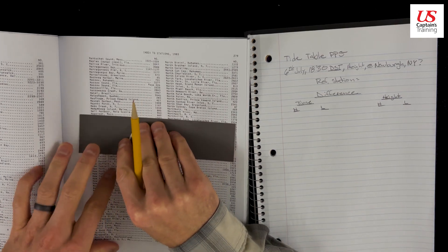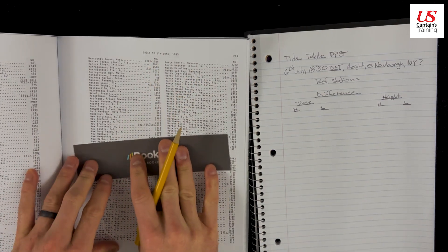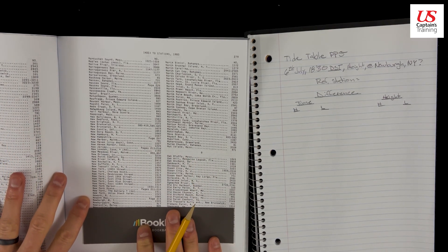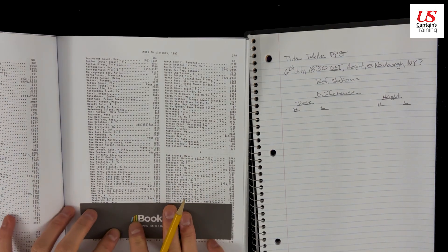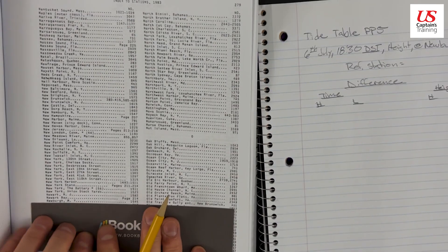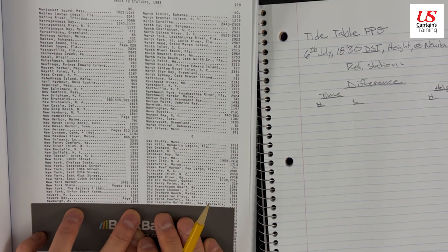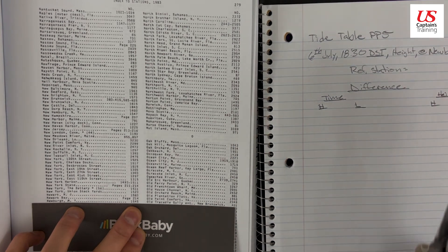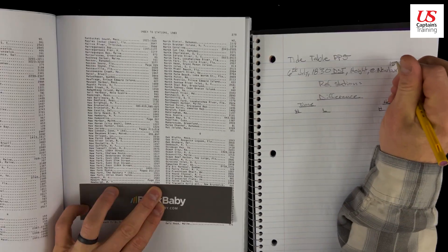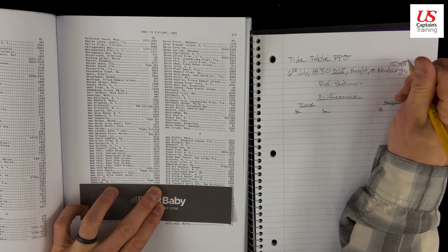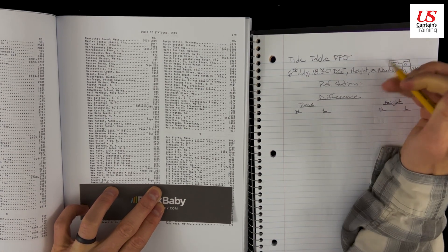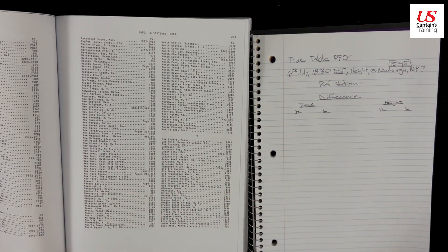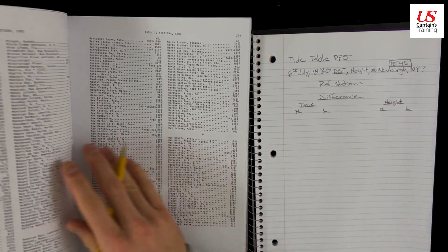Let's go into the index, index stations. We're looking for Newburgh. So we're going to N. L-M-N-M-N-O-N-E. Newburgh, one word. So here's all the news, but we're one word, so we're Newburgh. There we are. Newburgh, N-Y, 1545. Newburgh is 1545. All right, we took note of that. Don't get it confused with your time.